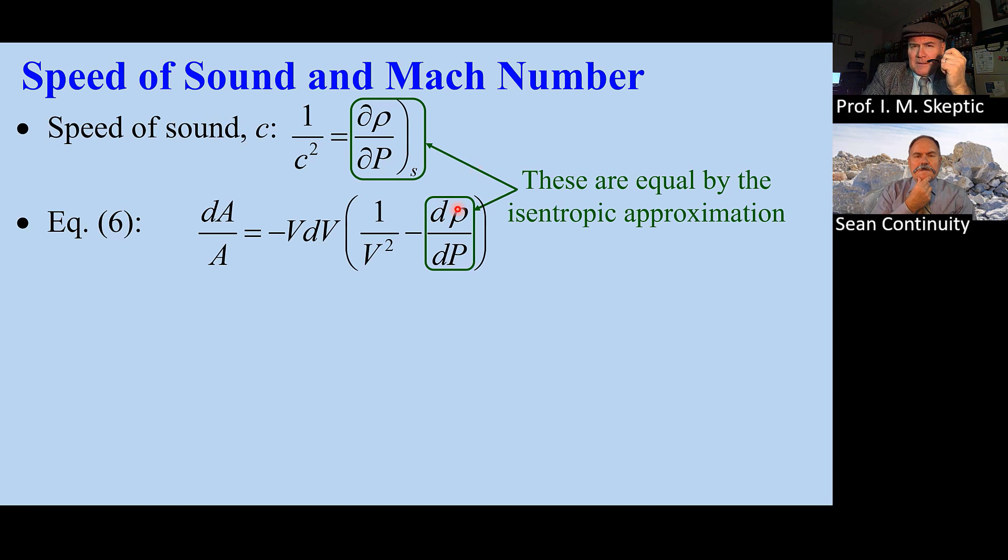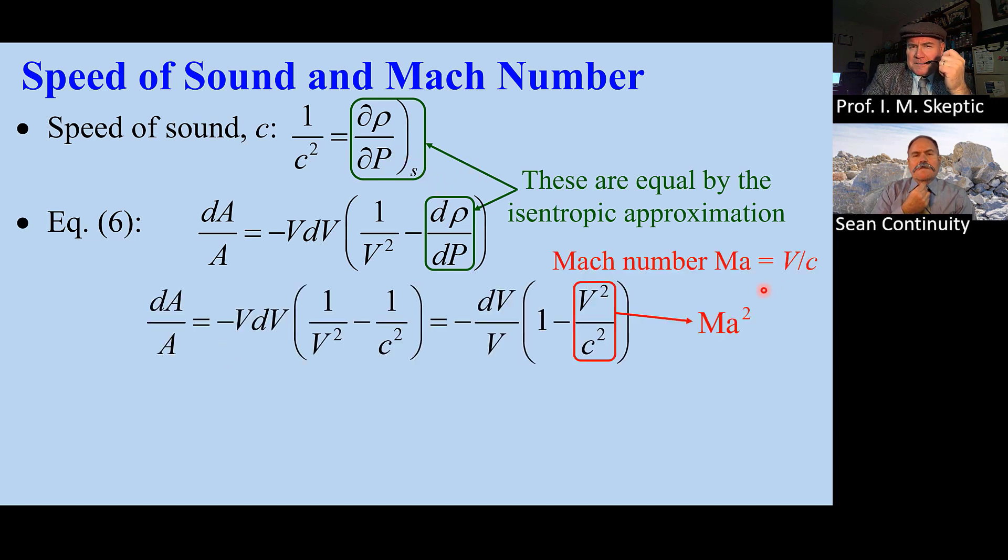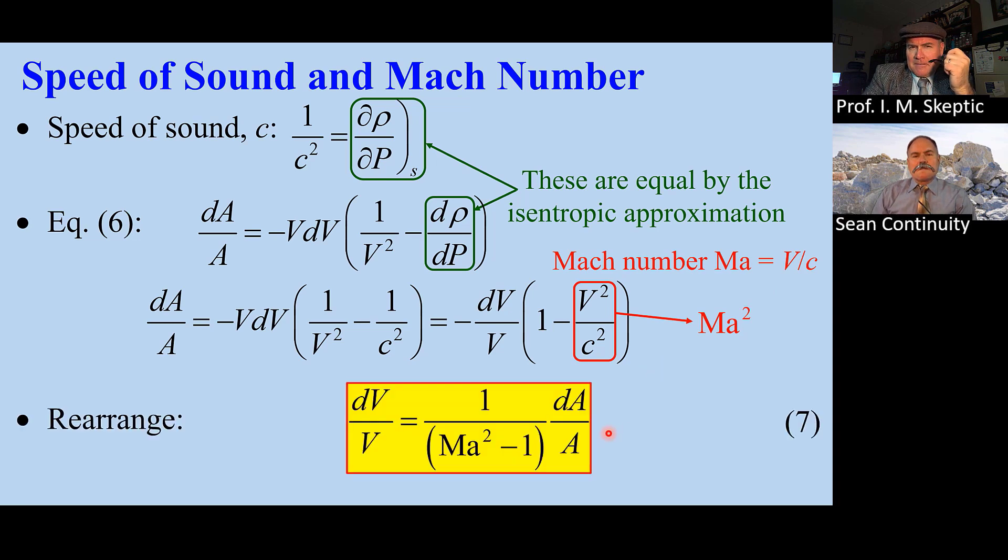Since our flow is isentropic, these two are the same, so we get this equation. But Mach number is defined as V/C, so this is Mach number squared. Finally, we get equation 7.